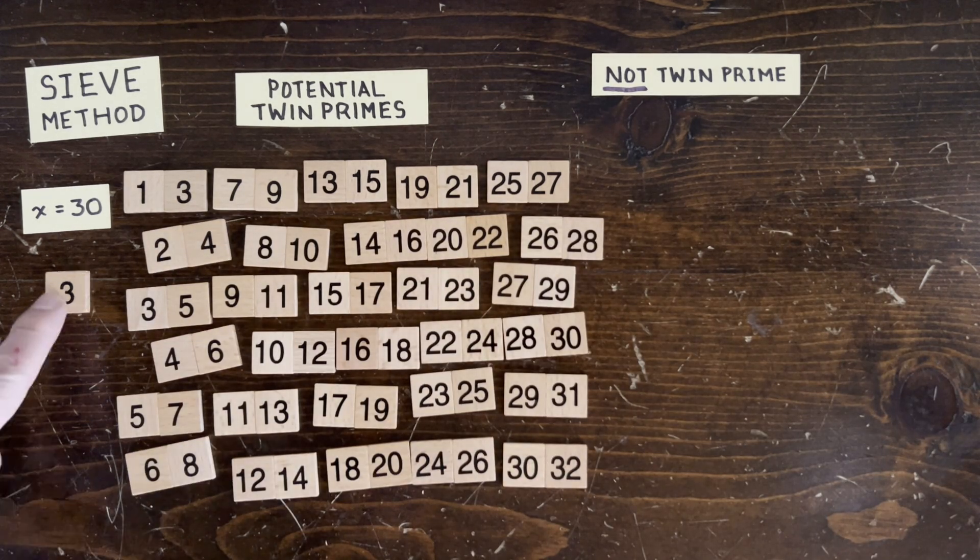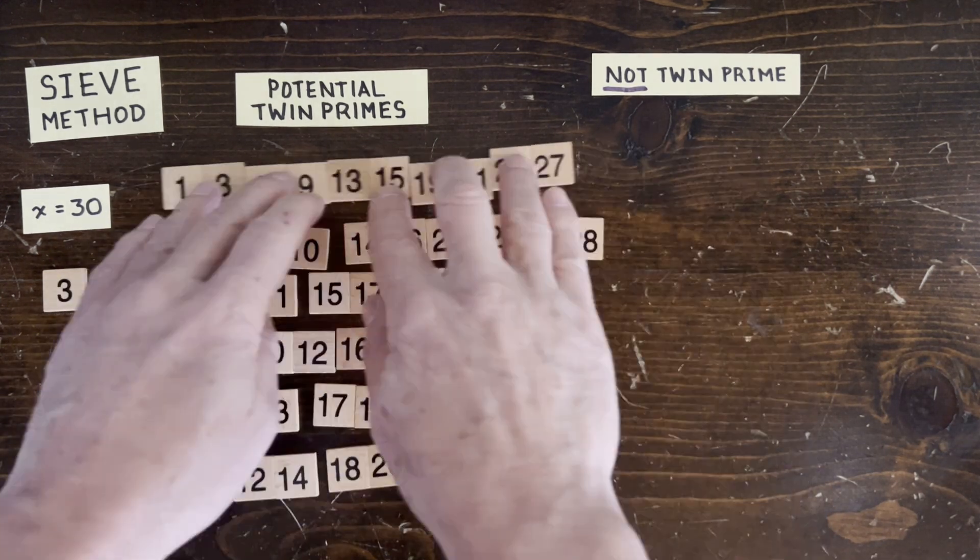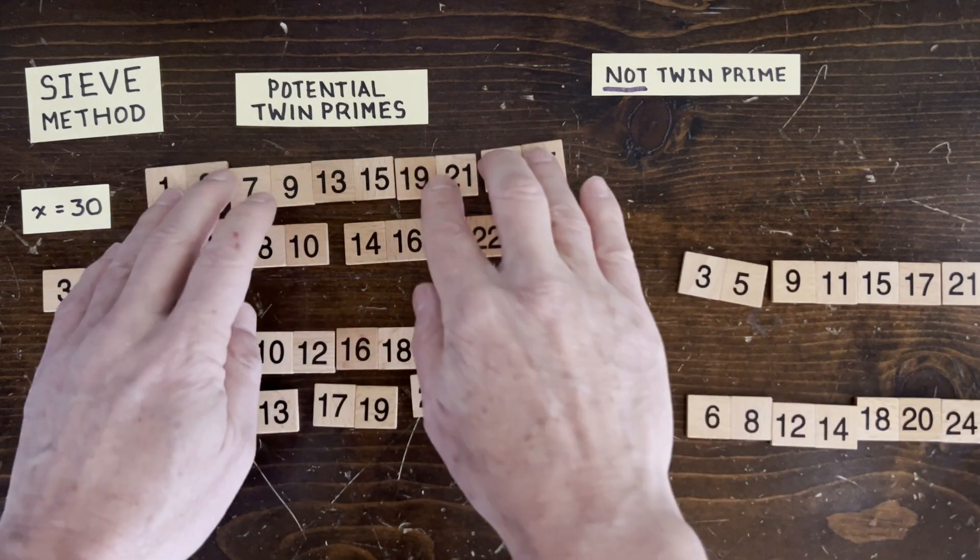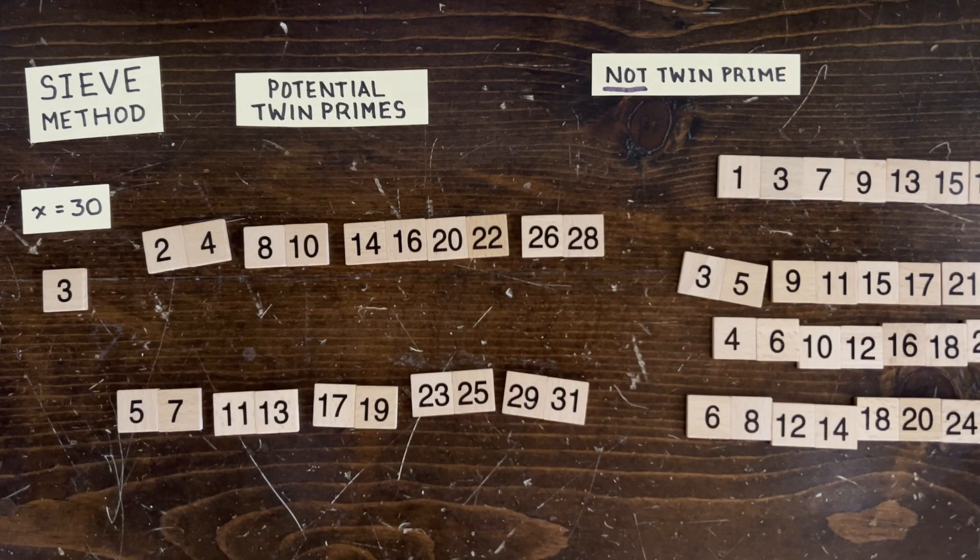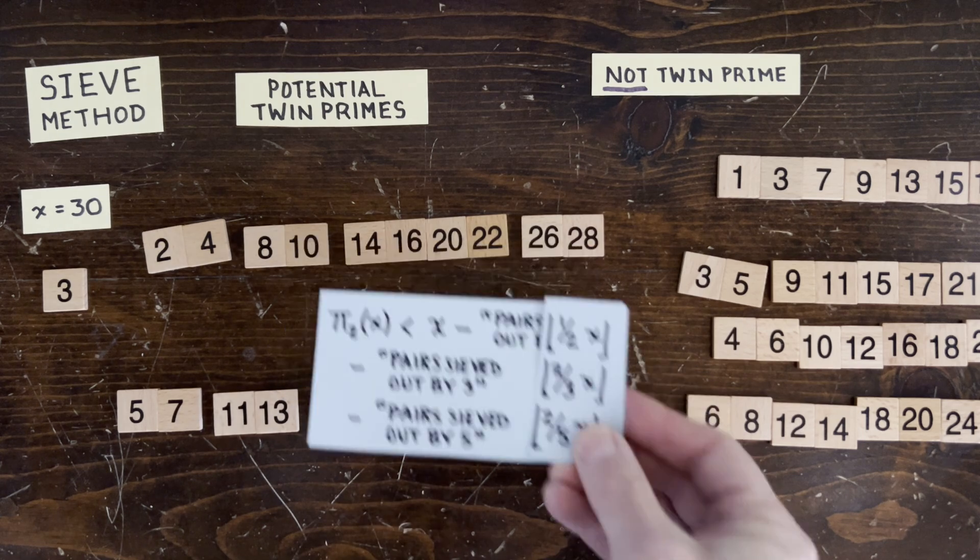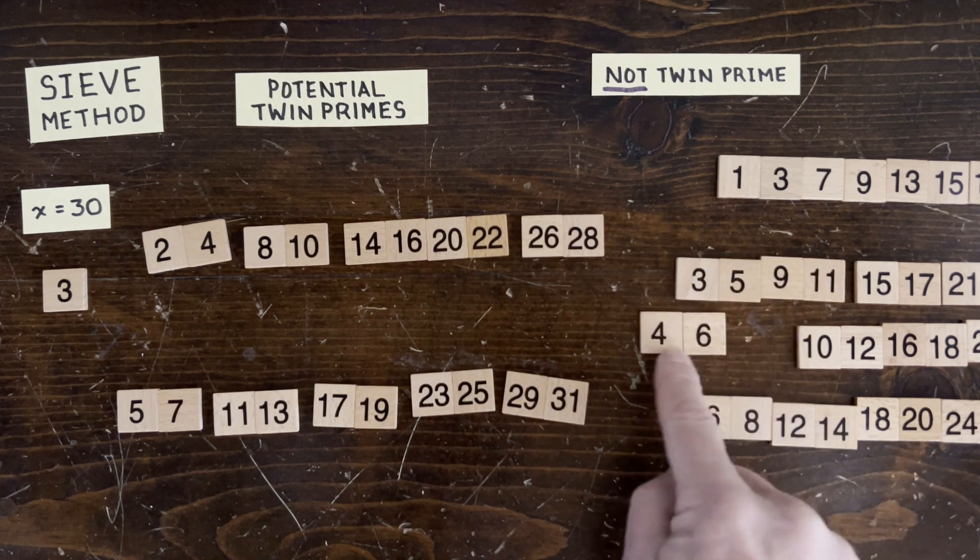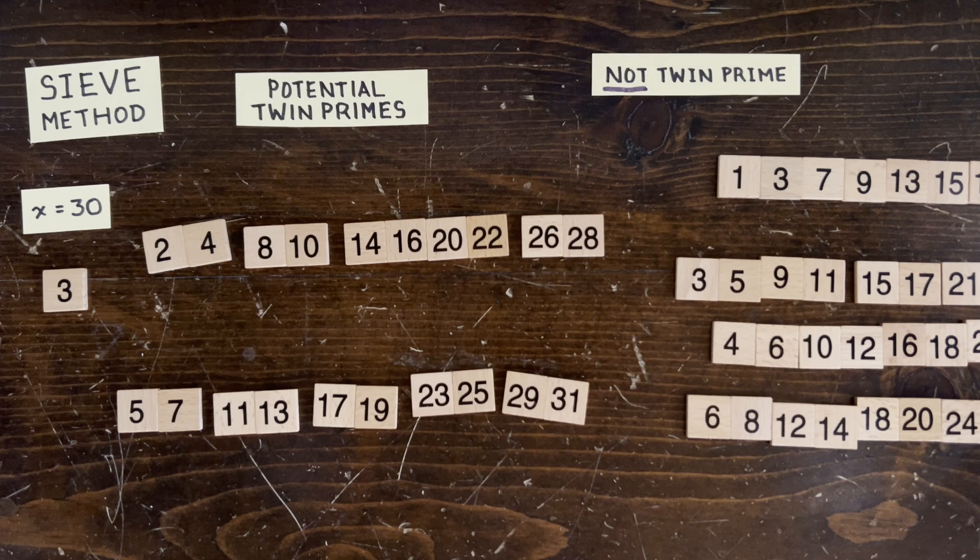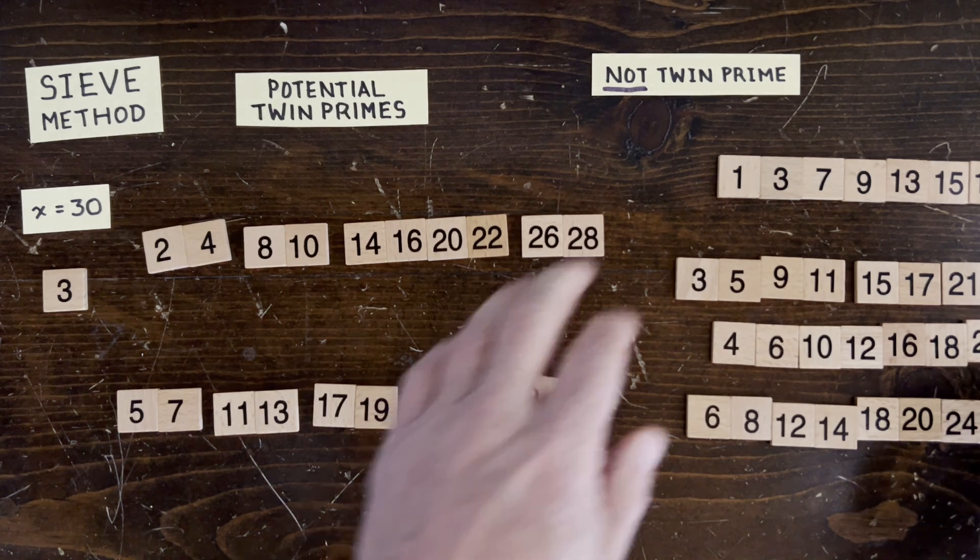Okay, now sieve with prime 3. This is more interesting because we don't just sieve out a third of the candidates. We sieve out two-thirds because if either number is a multiple of 3, then this can't be a twin prime because to be a twin prime, both numbers have to be prime. Okay, now let's put those back.